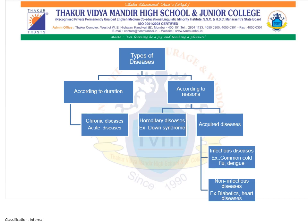Chronic diseases are the diseases which last for a longer span of time, and acute diseases are the diseases which last for a shorter span of time. According to reasons, diseases are classified into hereditary diseases and acquired diseases. Hereditary diseases are generally the diseases which pass on from generation to generation. Acquired diseases are again classified into infectious diseases and non-infectious diseases.